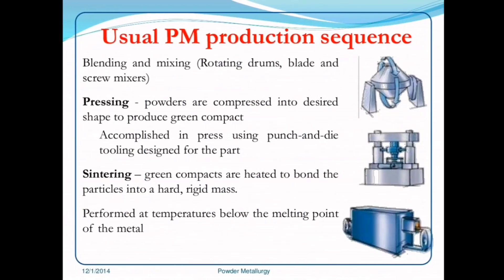The usual powder metallurgy production sequence begins with blending and mixing using rotating drums, blade, and screw mixers. Then pressing: powders are compressed into the desired shape to produce green compacts, accomplished in a press using punch and die tooling designed for the part. Sintering follows: green compacts are heated to bond the particles into a hard, rigid mass, performed at temperatures below the melting point of the metal.